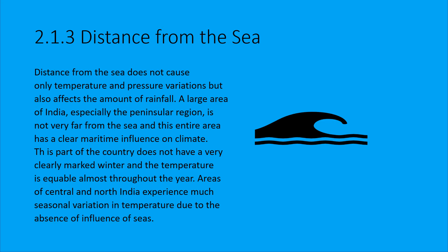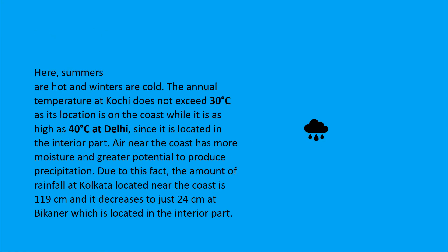For example, in interior areas like Delhi, summers are hot and winters are cold. But Kochi, which is near the coast, has an annual temperature of about 30 degrees centigrade and it doesn't rise much above that. Delhi can reach above 40 degrees in summer because it is an interior area, while coastal air brings more moisture.